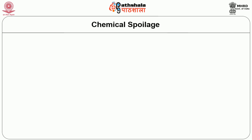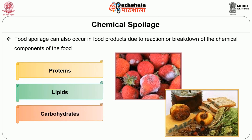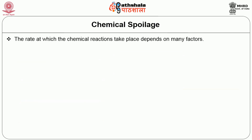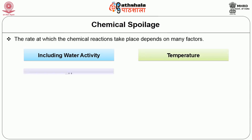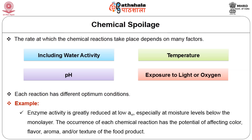Food spoilage can also occur in food products due to the reaction or breakdown of the chemical components of the food, including its proteins, lipids, and carbohydrates. The rate at which chemical reactions take place depends on many factors, including water activity, temperature, pH, and exposure to light or oxygen. Each reaction has different optimum conditions — for example, enzyme activity is greatly reduced at lower water activity, especially at moisture levels below the monolayer. The occurrence of each chemical reaction has the potential of affecting color, flavor, aroma, or texture of the food product.